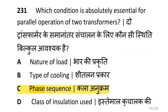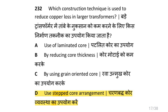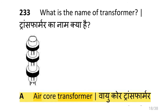Which condition is absolutely essential for parallel operation of two transformers? That is the phase sequence must be equal. Which construction technique is used to reduce copper loss in large transformers? That is the use of a stepped core arrangement. What is the name of a transformer with no iron core? Air core transformer.